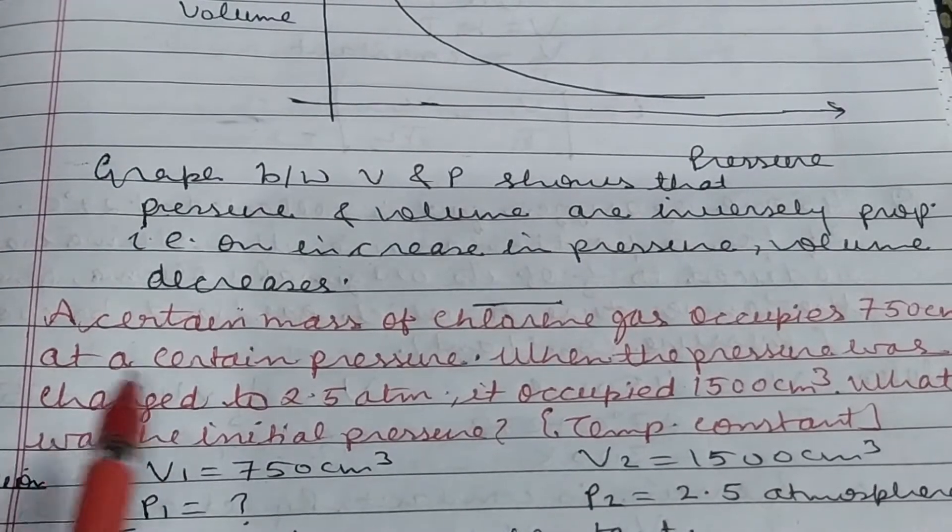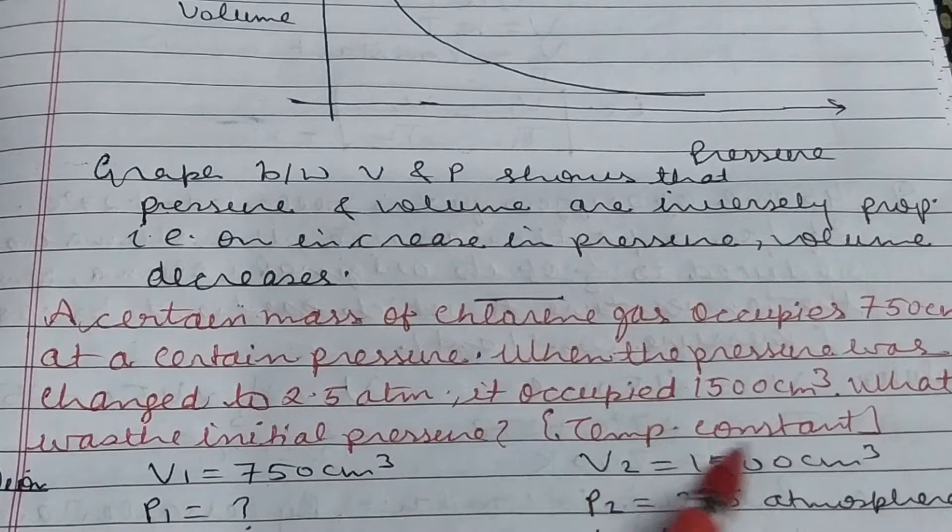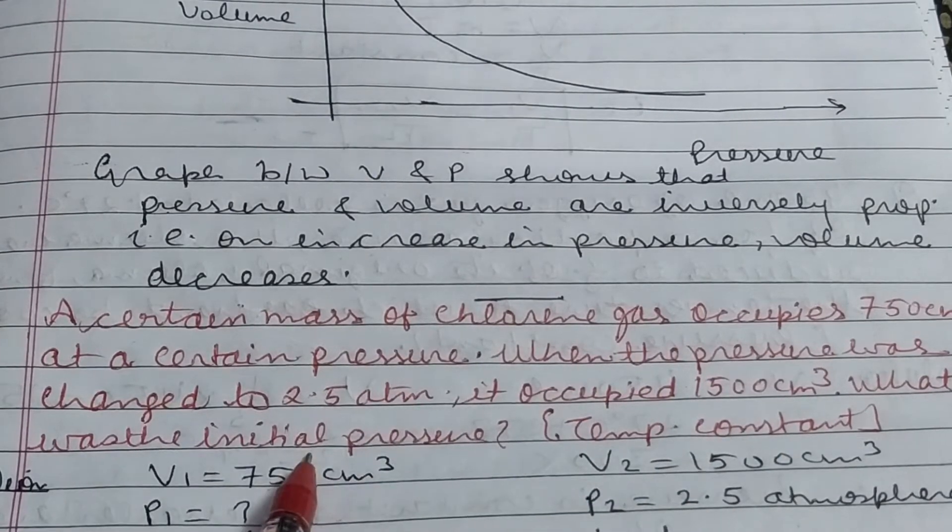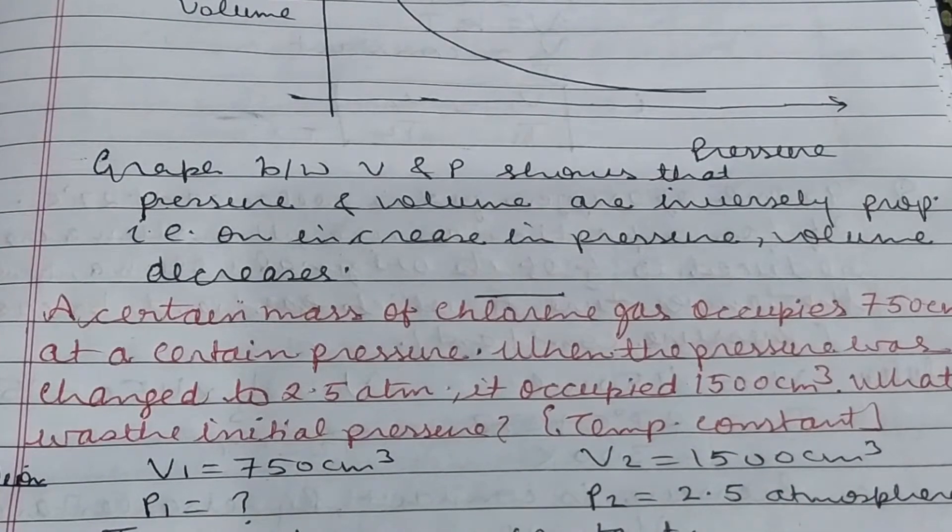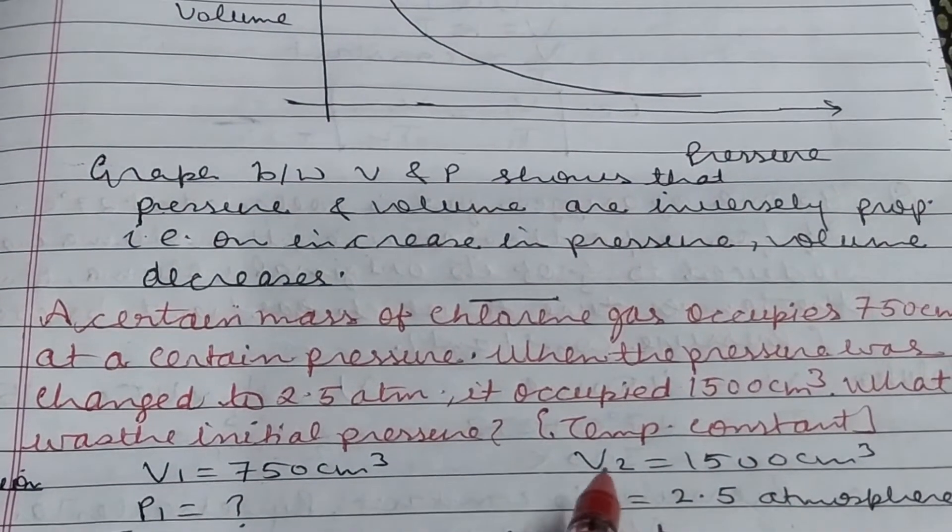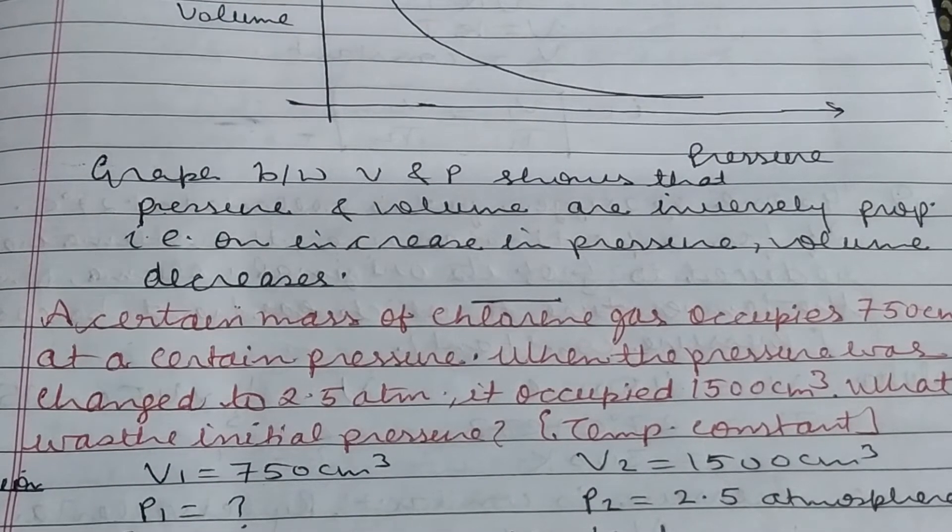Now we'll do a numerical problem based on Boyle's law. Always check which parameter is constant. If temperature is constant, apply Boyle's law. If pressure is constant, apply Charles' law. If none is constant, apply ideal gas equation.